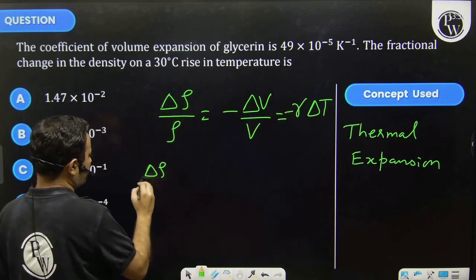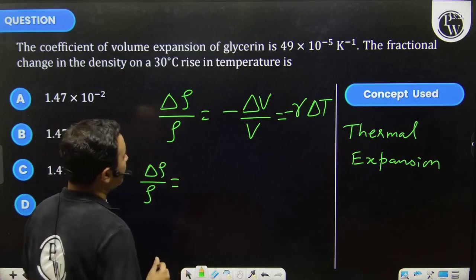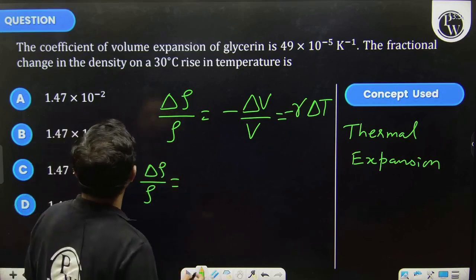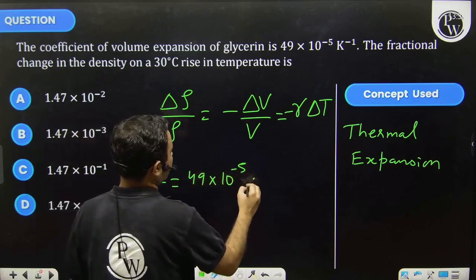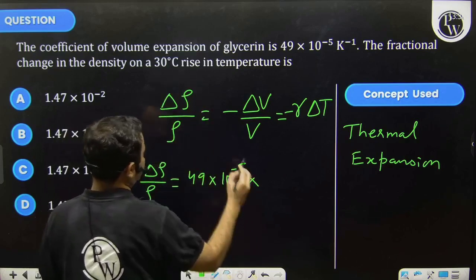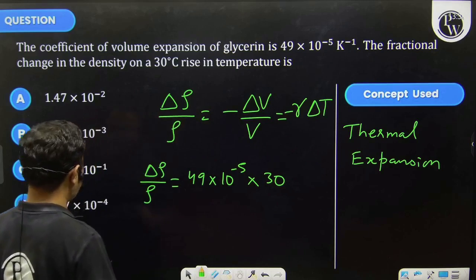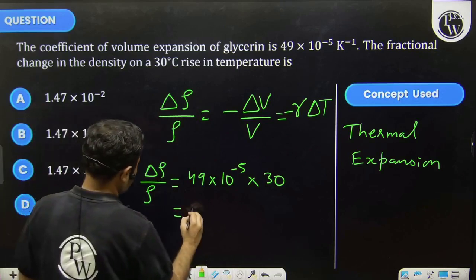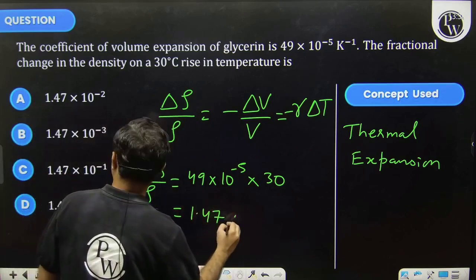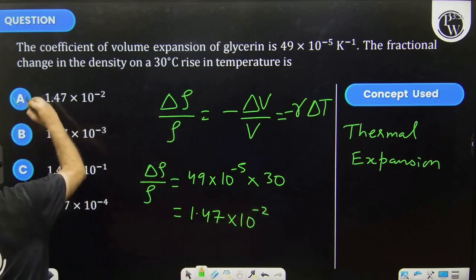So fractional decrease in density would be 49 × 10⁻⁵ multiplied by 30 degree rise in temperature. The answer would be 1.47 × 10⁻² so option A is the correct answer.